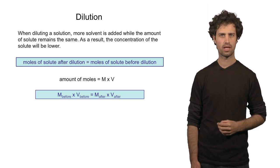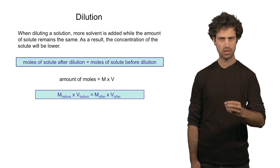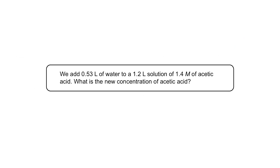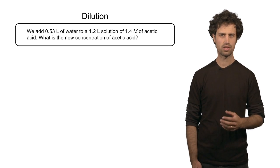So let's look at a couple of examples that puts this into practice. Let's say I have a solution, 1.2 liters of a 1.4 molar acetic acid solution. What if I add 0.53 liters of water on top of that? What will be the new concentration of acetic acid?